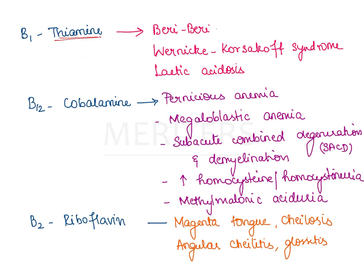Thiamine deficiency results in beriberi, Wernicke's encephalopathy, and Korsakoff psychosis, leading to Wernicke-Korsakoff syndrome, and lactic acidosis. Cobalamin, that is B12 deficiency, results in two types of anemia: pernicious anemia due to deficiency of intrinsic factor, and megaloblastic anemia from deficiency of folic acid and B12. One of the important manifestations of B12 deficiency is subacute combined degeneration of the spinal cord with demyelination seen in the cerebral cortex.